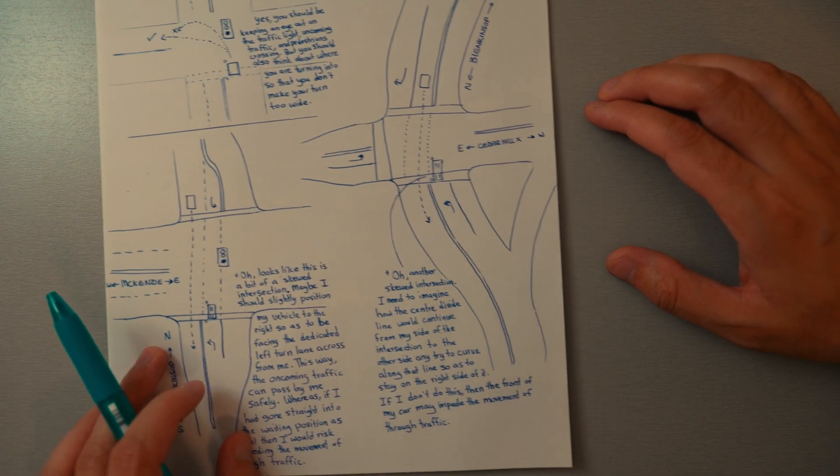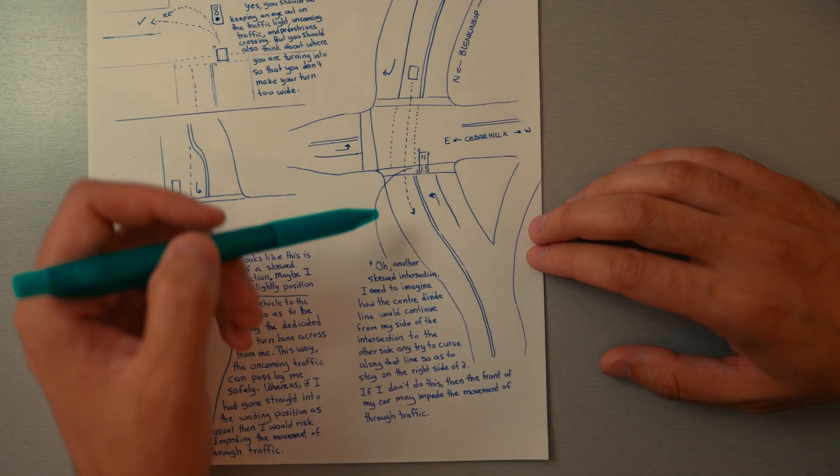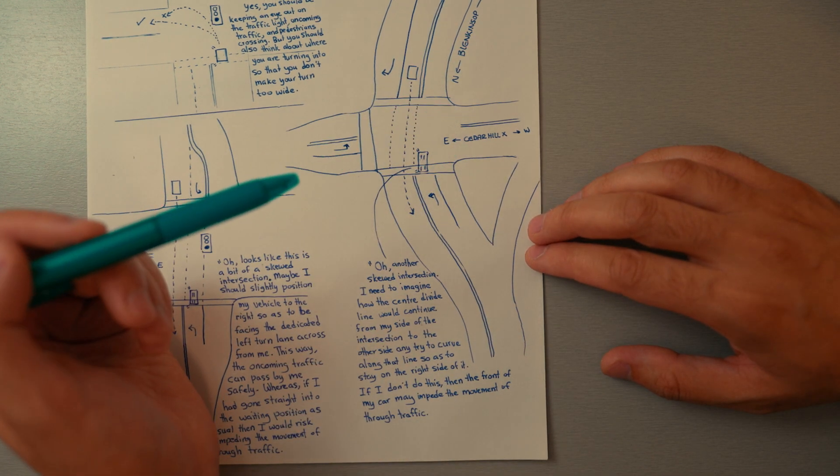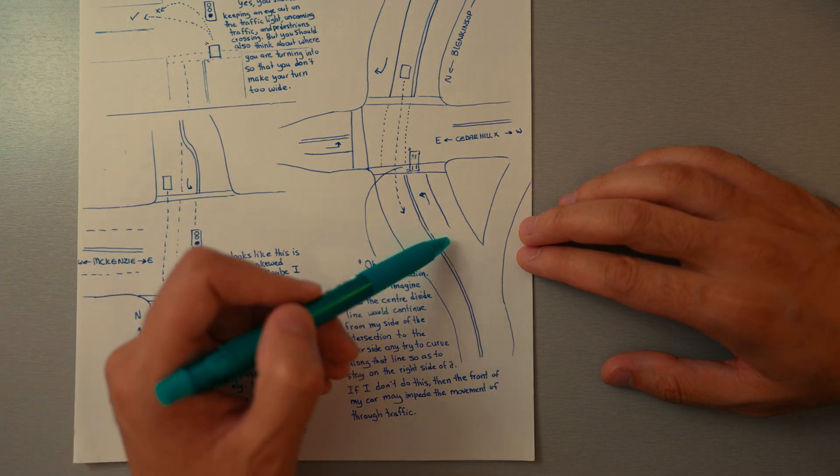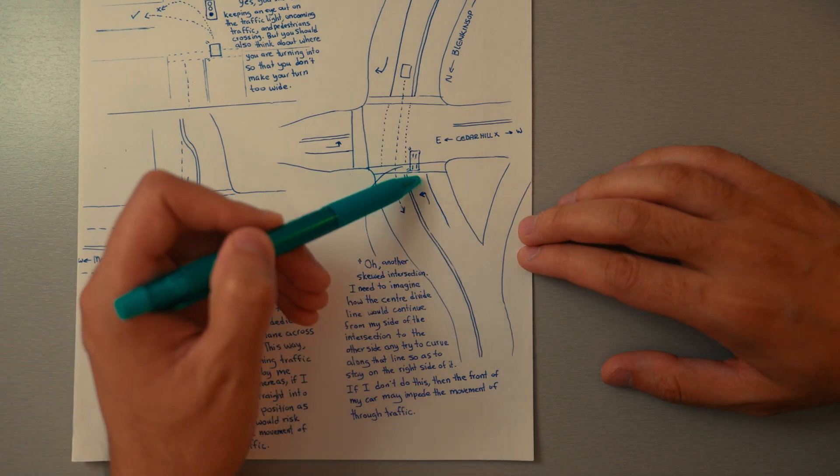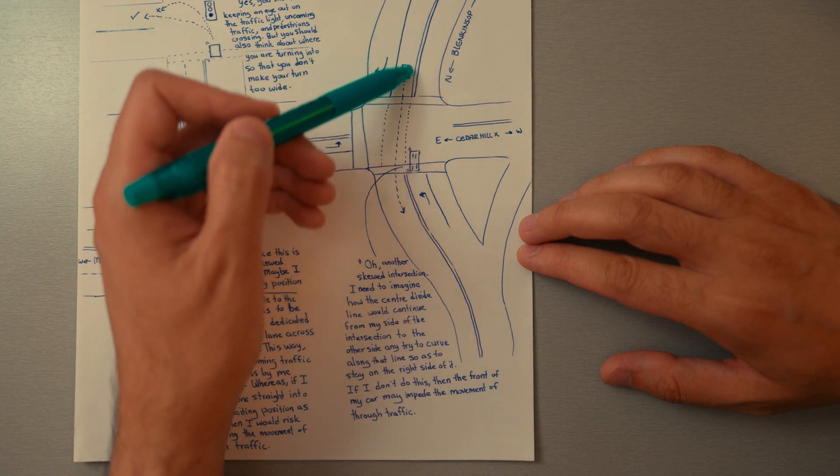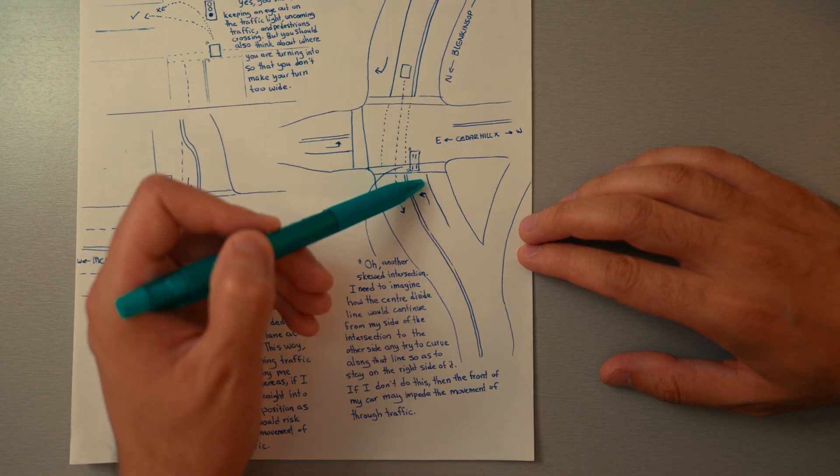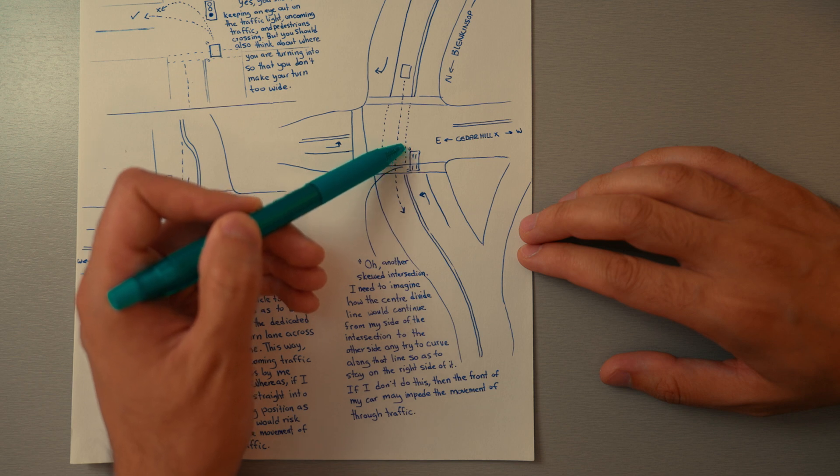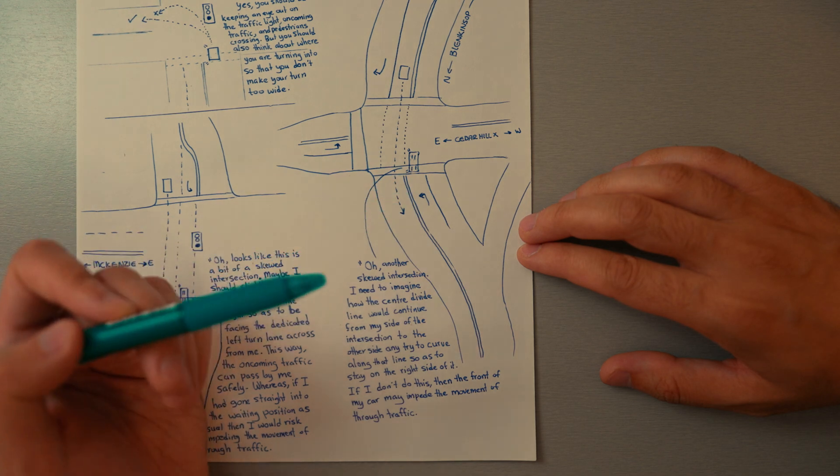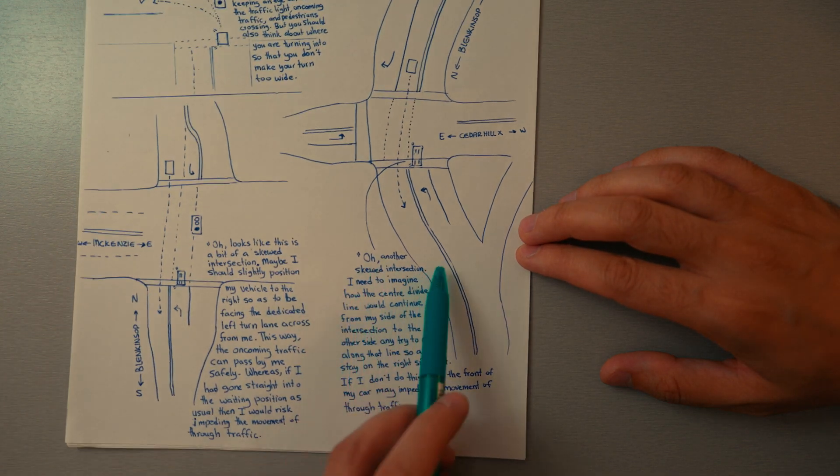Same idea here. This is Cedar Hill Cross and Blinkensop in Victoria. If we go into this turn lane and don't think about how this intersection is skewed, if we go into our waiting position, we're going to be slightly in the oncoming traffic path.